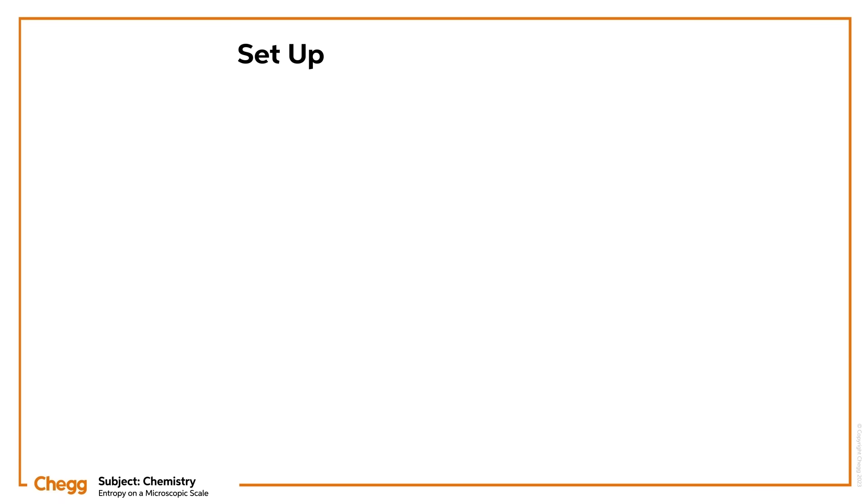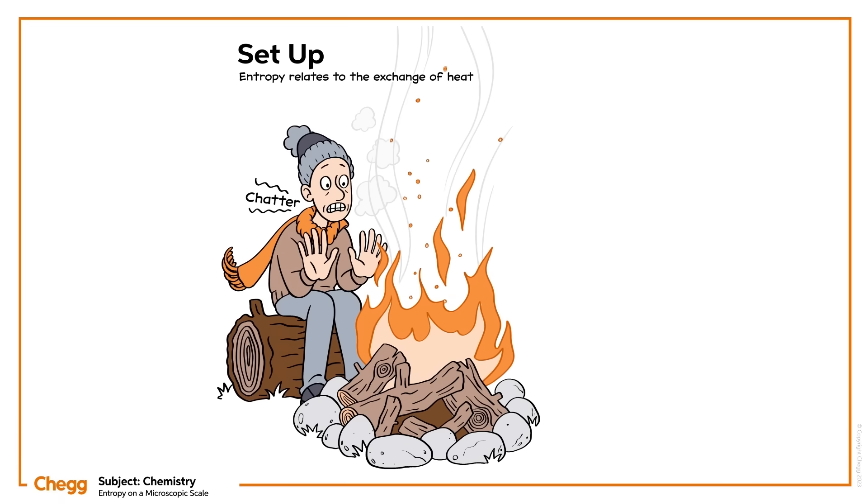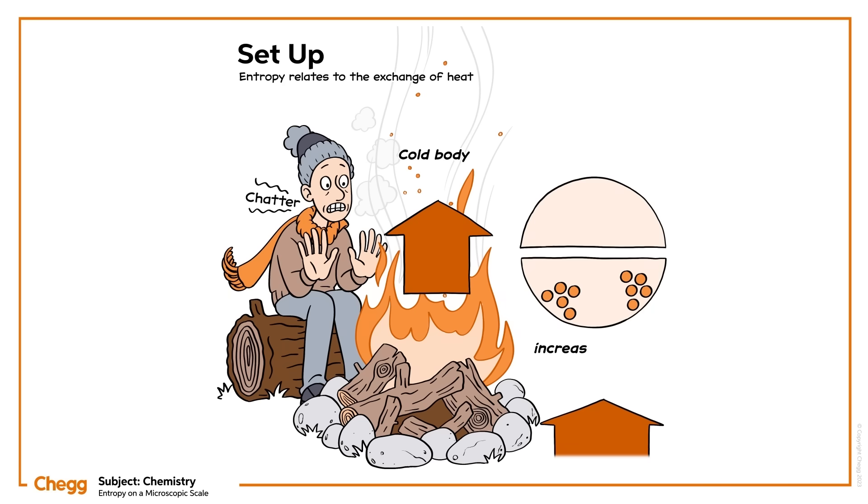Speaking generally on the macroscopic scale, entropy relates to the exchange of heat and helps to explain why energy is always transferred from a hot body to a cold body. When this happens, the hot body will have an increased entropy because it will now have less heat energy available. At the same time, the entropy will decrease in the cold body because it'll now have more energy available to do work.